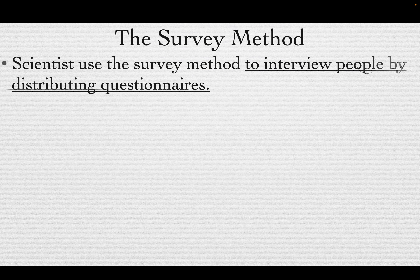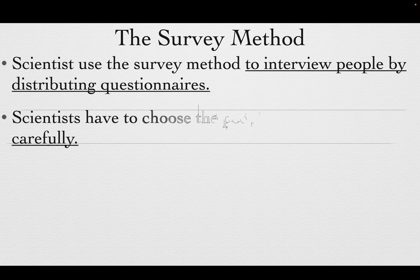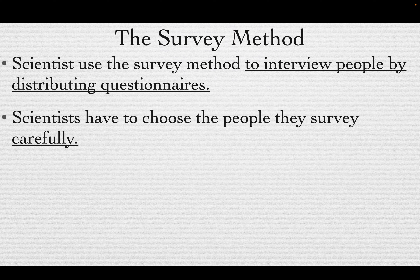The survey method involves scientists interviewing people by distributing questionnaires. This is becoming easier and cheaper. Scientists have to choose the people they survey carefully. If we're looking at something like ADHD, we're trying to find out when it comes on. We see more ADHD in children and high school students, but people appear to lose ADHD as they get older — does it have some kind of aging out, or does it become easier to deal with?